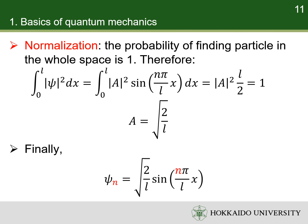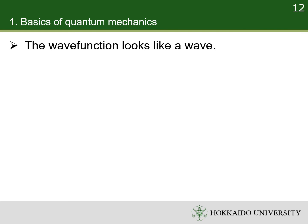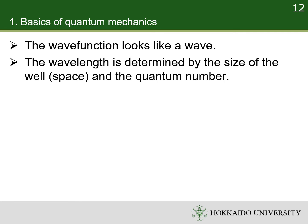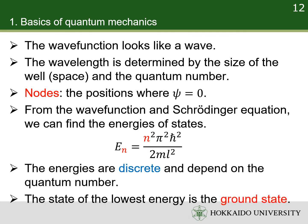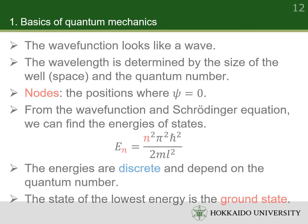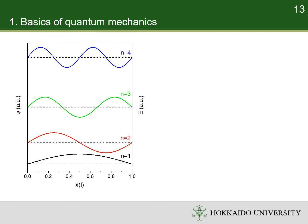The final wave function takes such a form. The wave function looks like a wave — that is why it is called a wave function. The wavelength is determined by the size of the well and the quantum number. The nodes are the positions where the wave function is zero, and the number of nodes depends on the quantum number. From the wave function and the Schrödinger equation, we can find the energies of the states. The energies are discrete and dependent on the quantum number. The state of the lowest energy is the ground state. Here, I show four wave functions with the lowest energies, with the zero point of each offset proportional to its energy, so we can see their shapes and relative energies clearly.